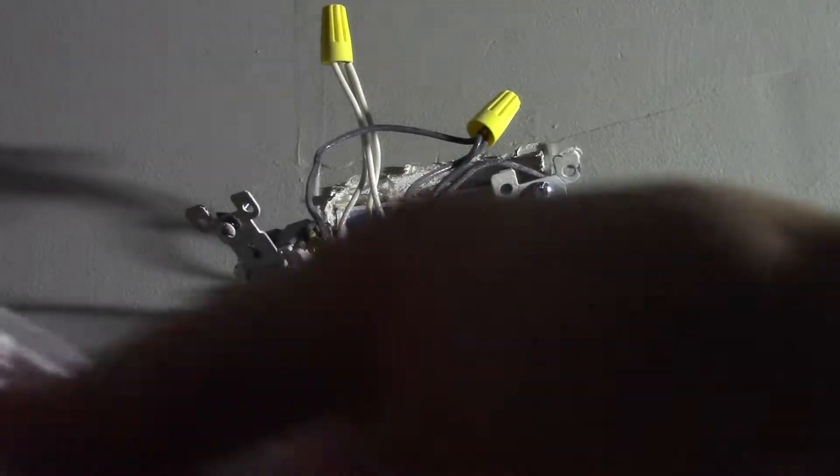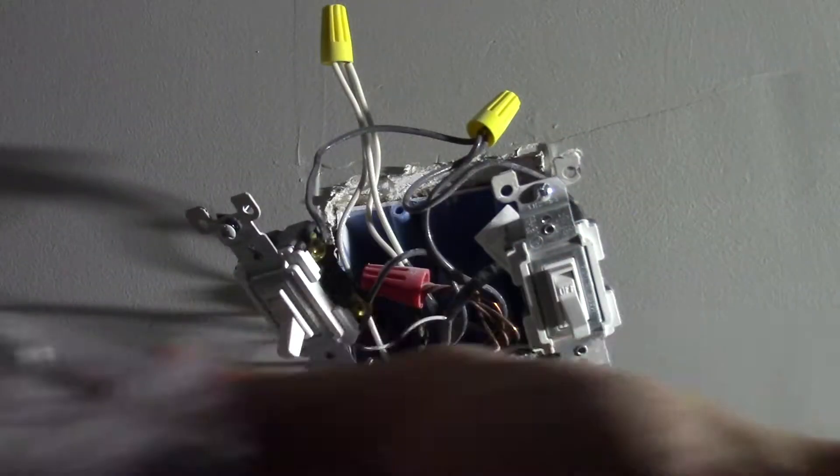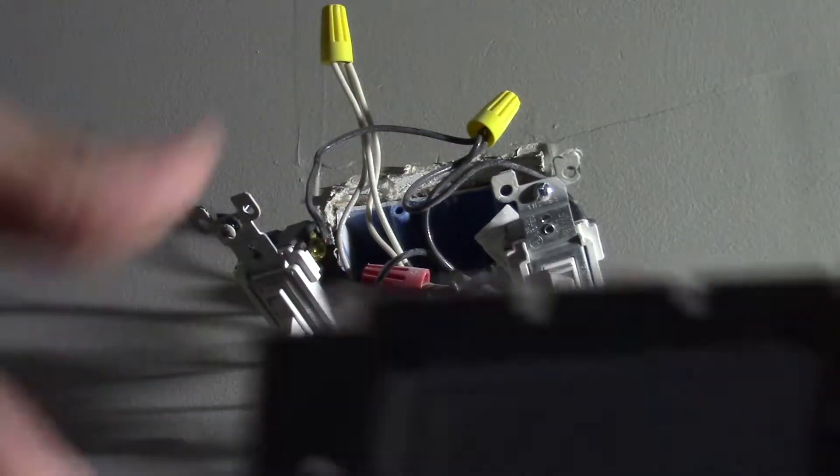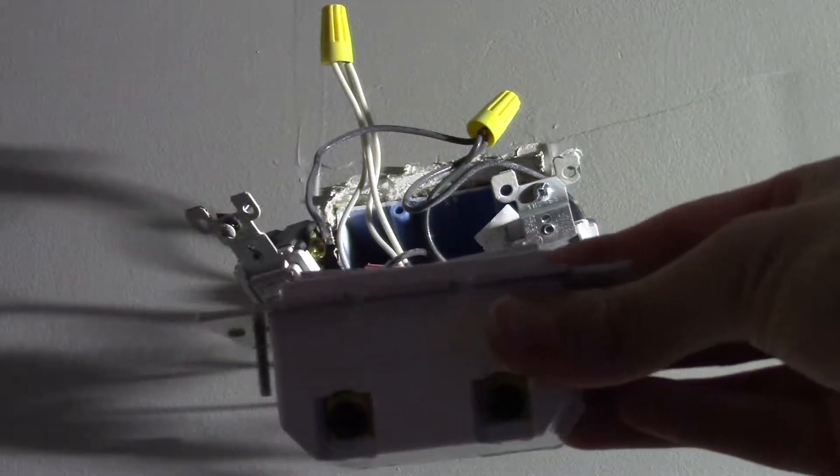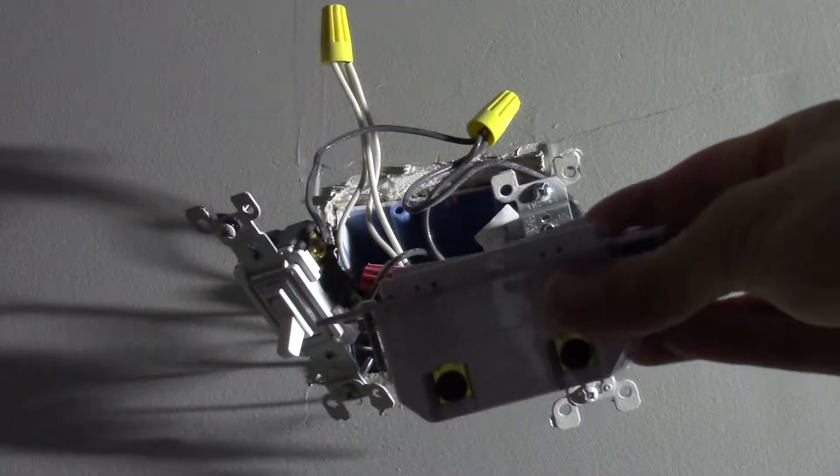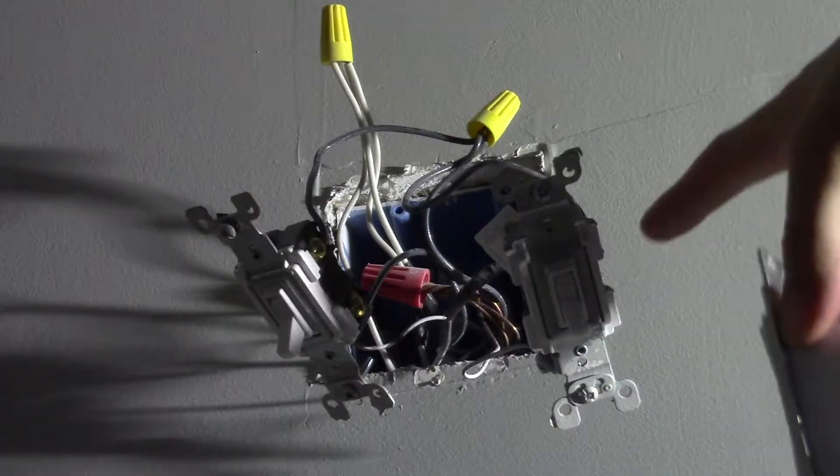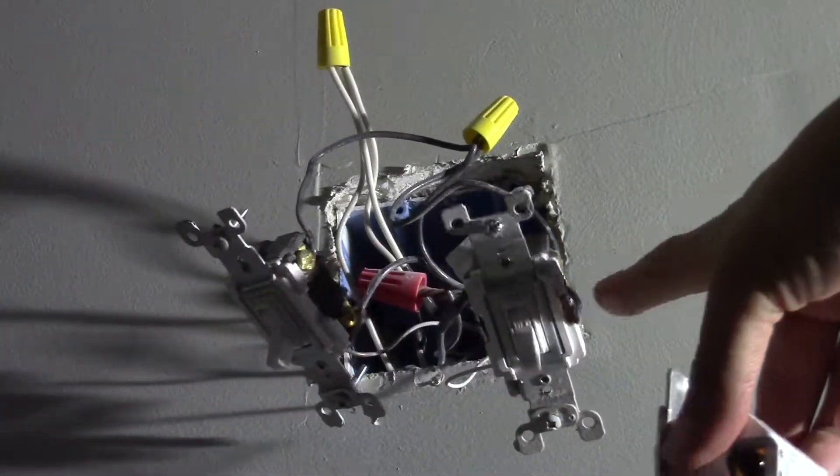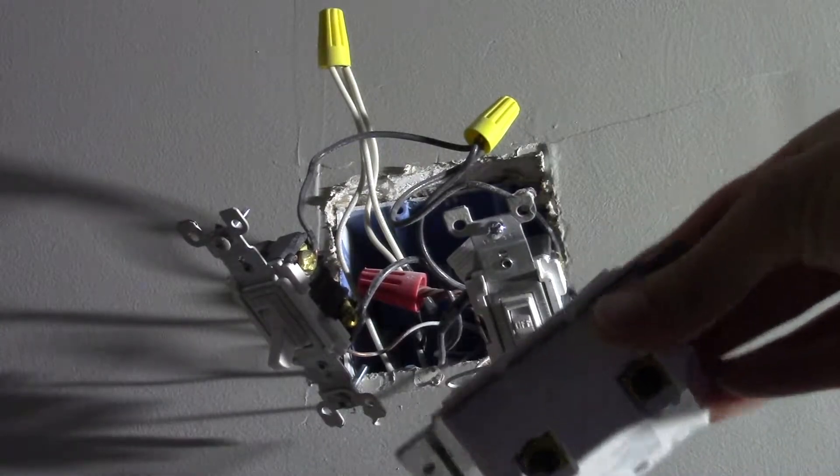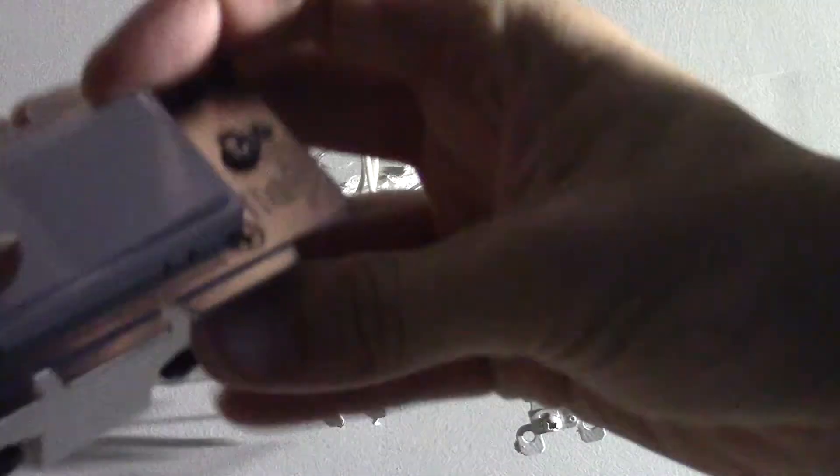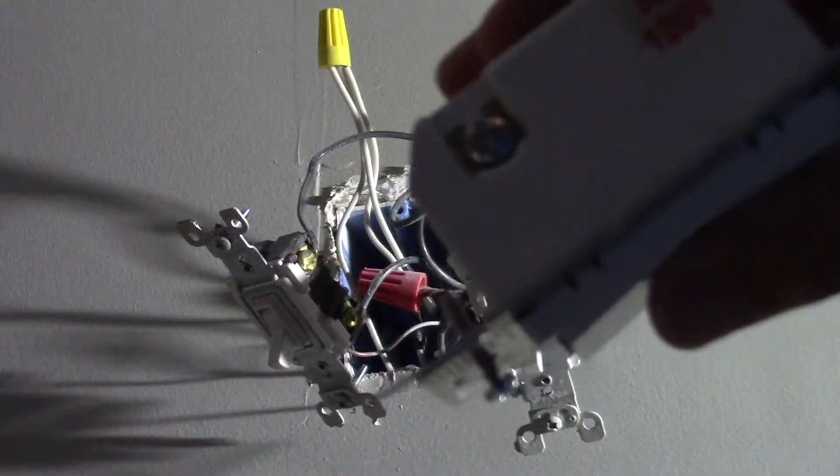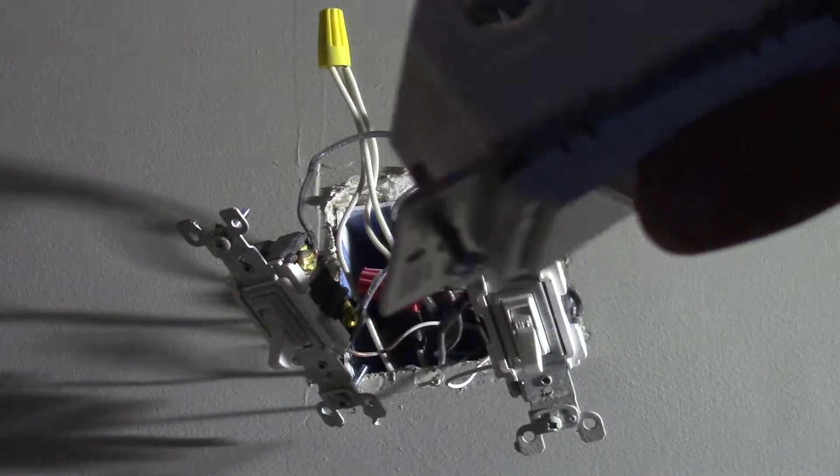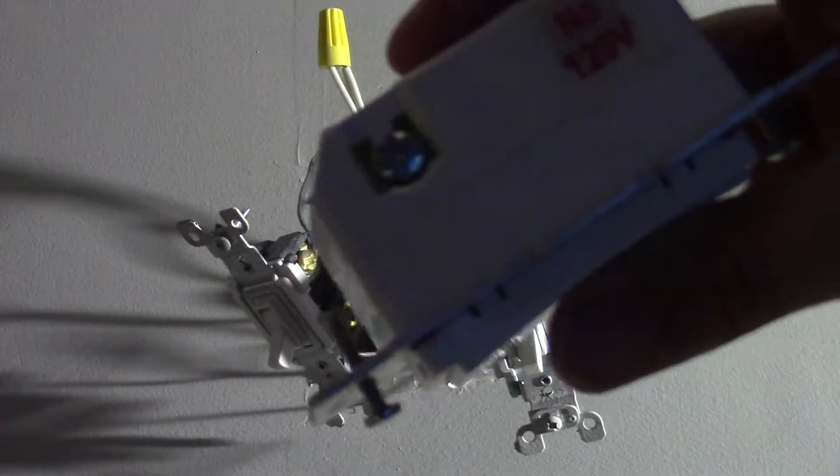One thing to note is with these newer style ones now, you're going to have your two blacks on one side and that's going to be pretty straightforward. You're going to just make sure that you put the appropriate line and load with the corresponding line and load on the new one. But you are going to need to note that there is a neutral requirement on this, so that's the white wire.